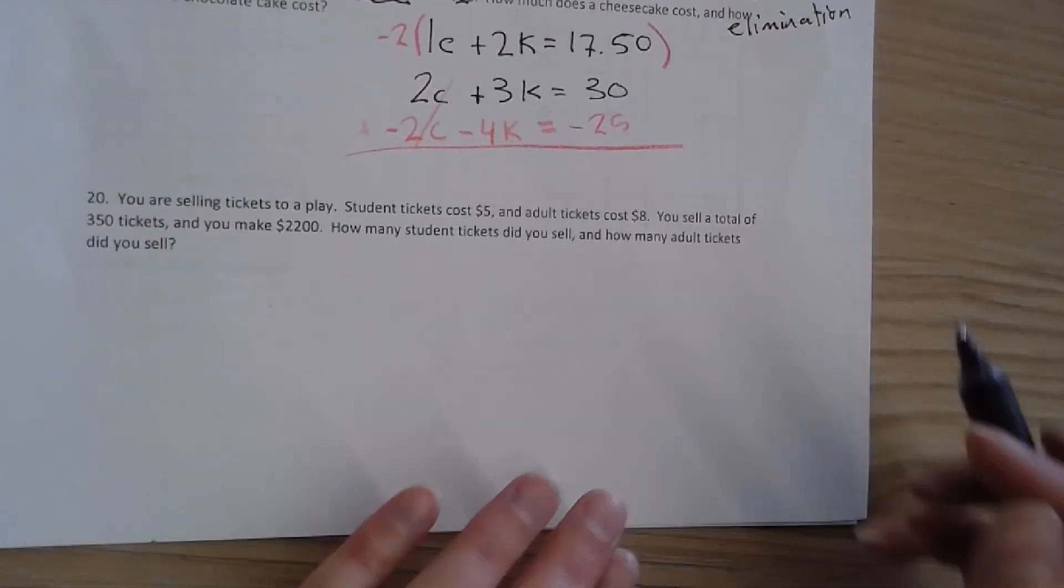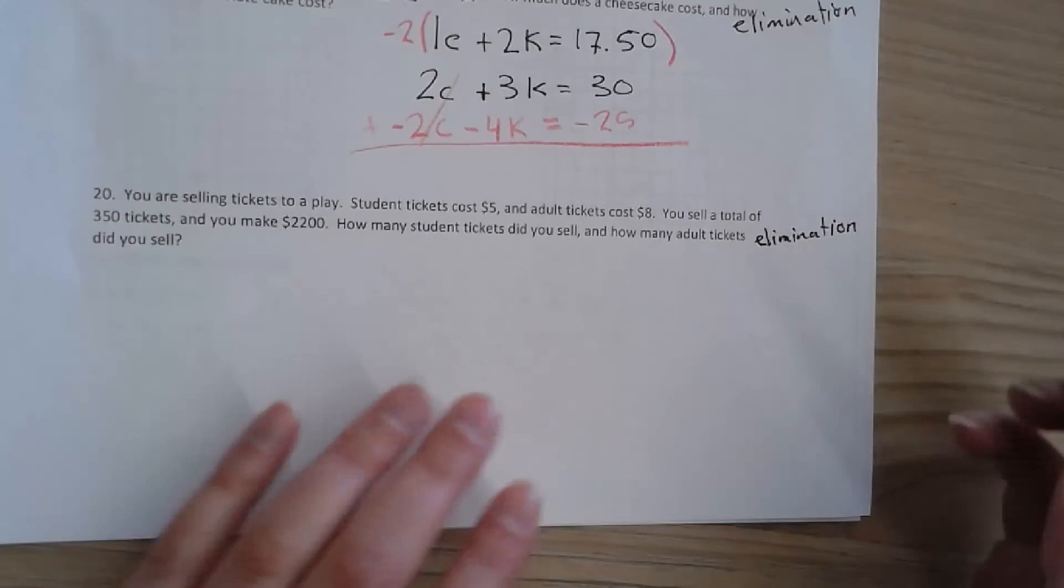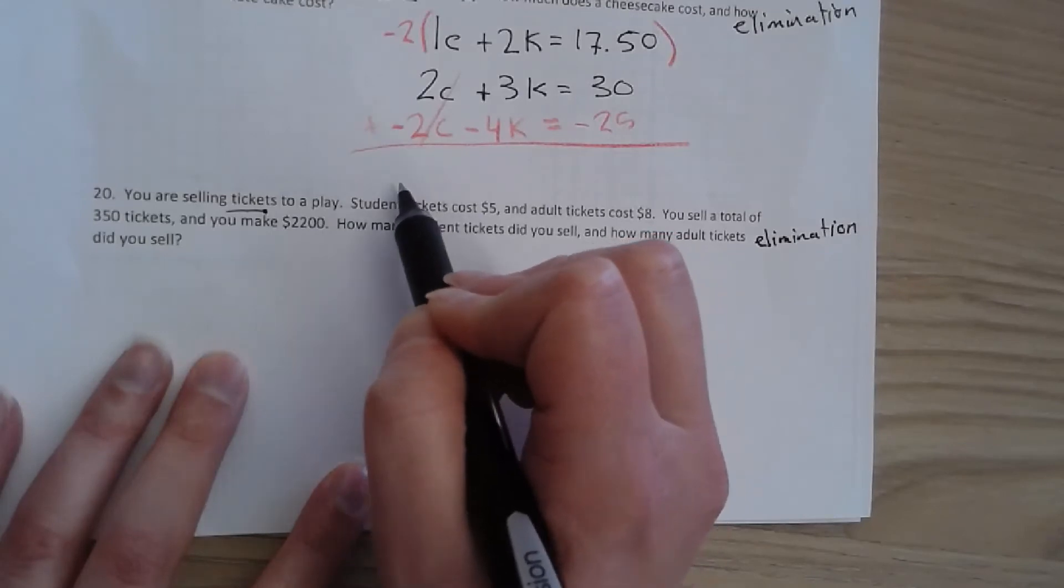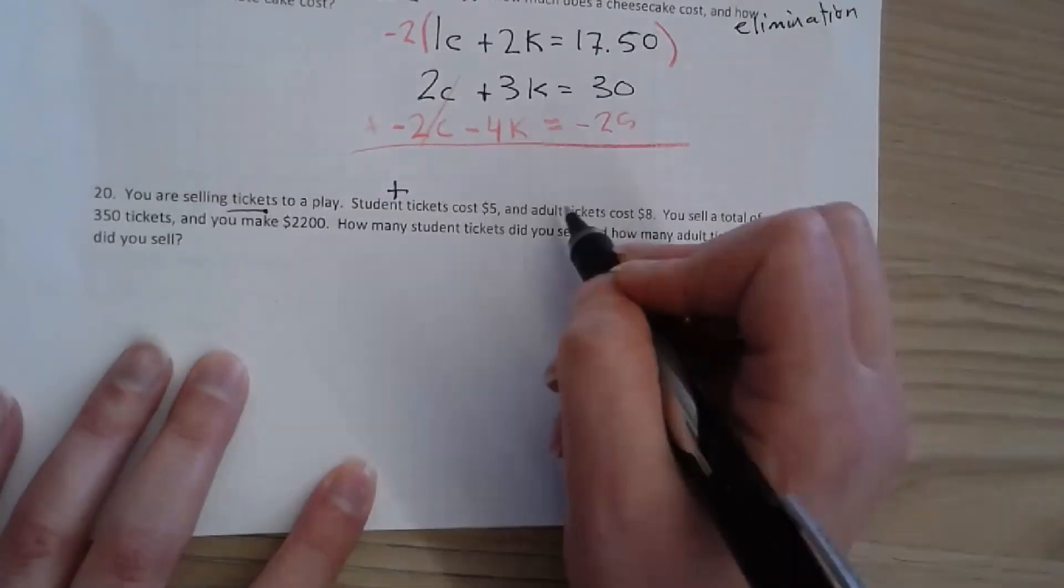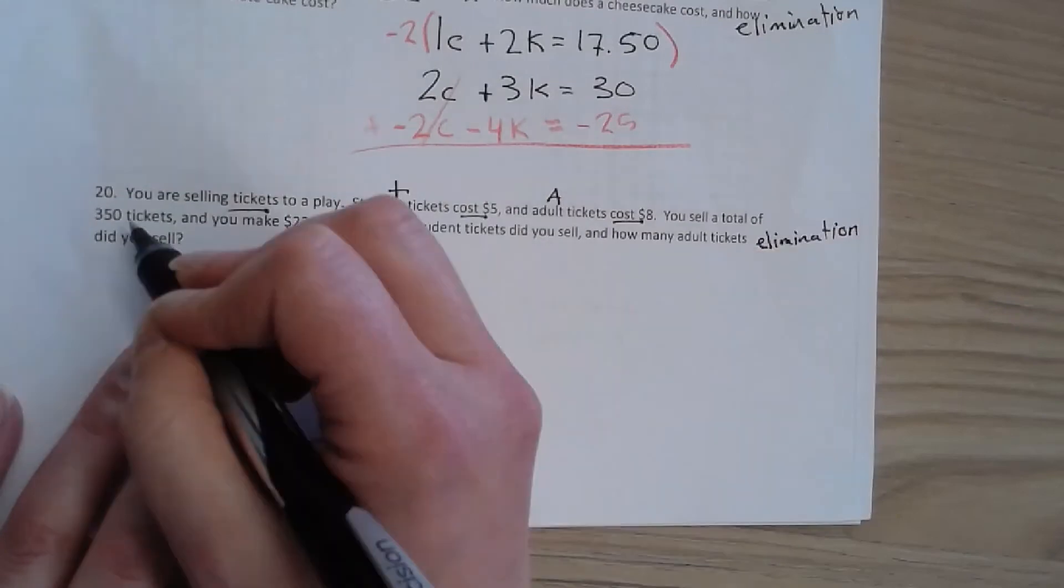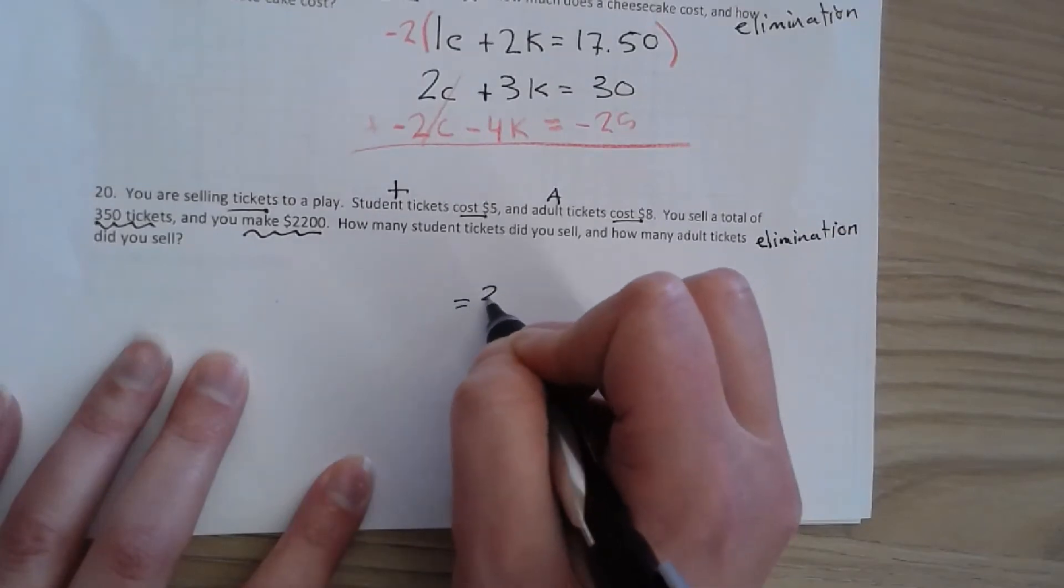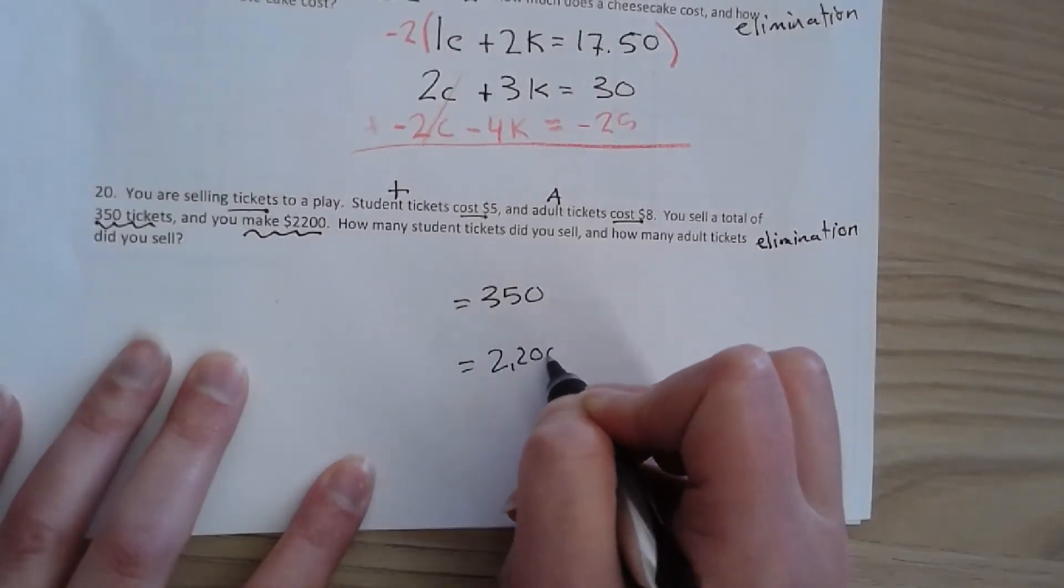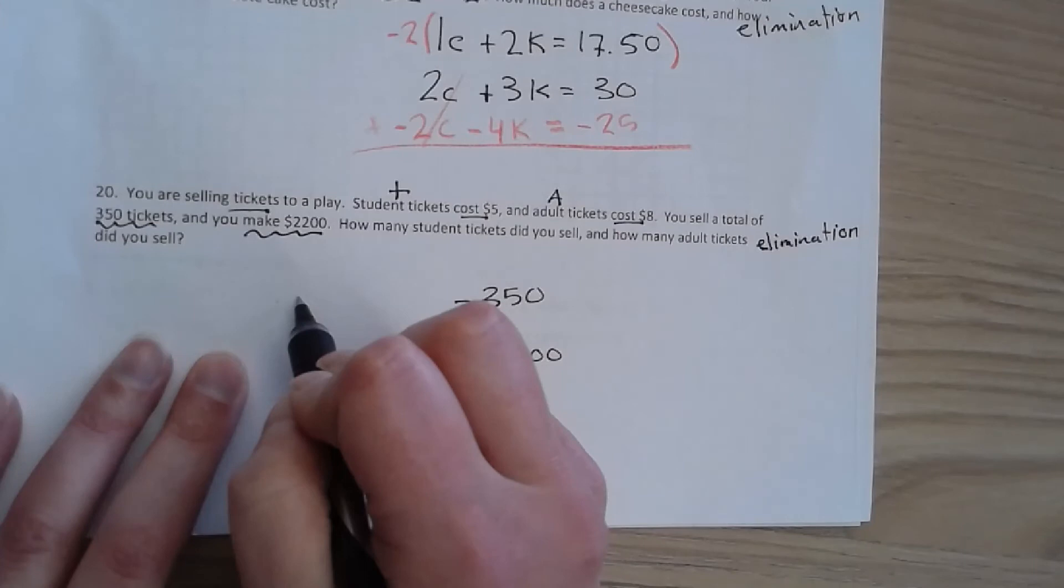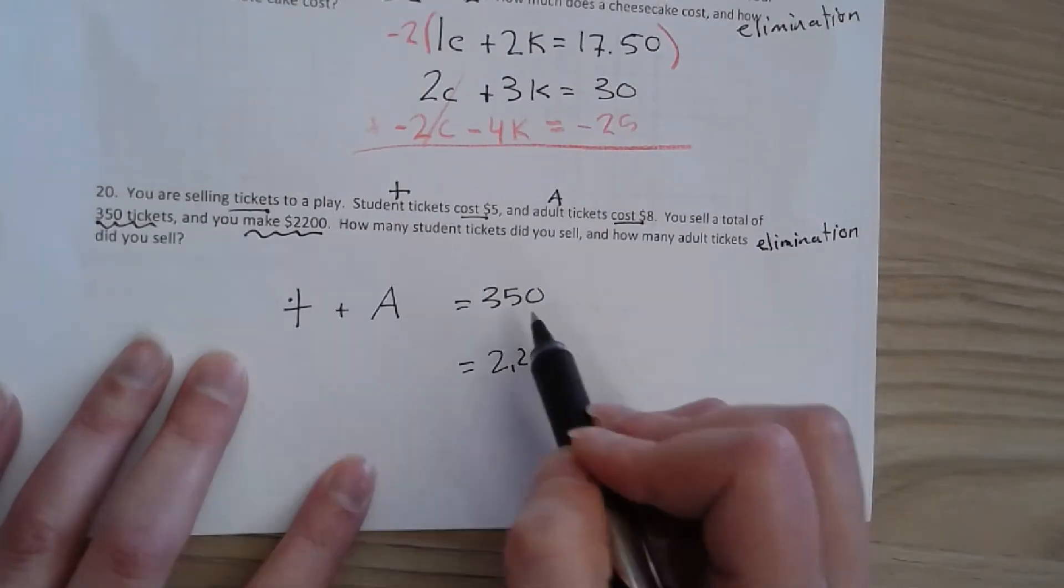On 20 we're going to use elimination again as our method and on this one I'm just going to set it up for you guys. So you are selling tickets. What type of tickets? Student tickets. I'm going to put T for student tickets and A for adult tickets. Students cost five, adult cost eight. I sell 350 total and I make 2,200. So I've got two totals. I've got 350 tickets total and I've got 2,200 dollars total. So the tickets are just talking types of tickets and our types of tickets are student tickets plus adult tickets. And that was a total of 350 tickets.